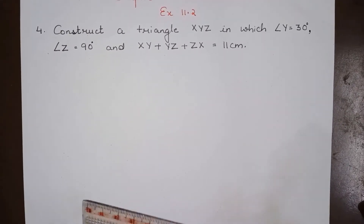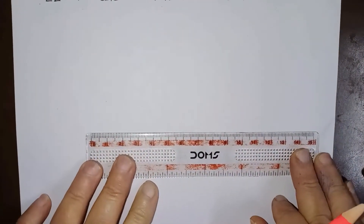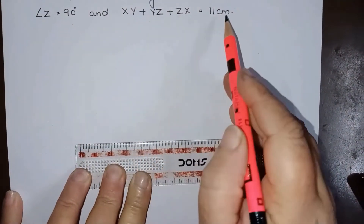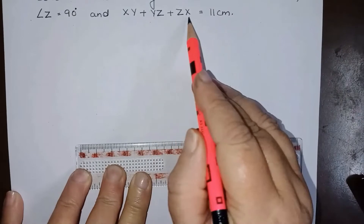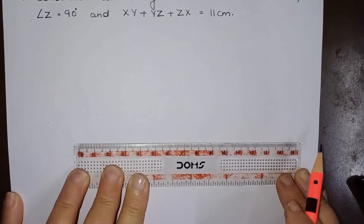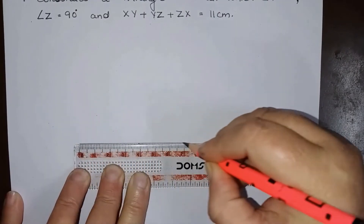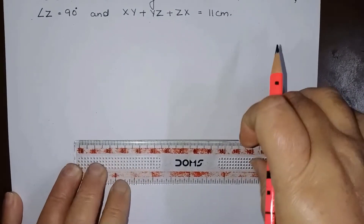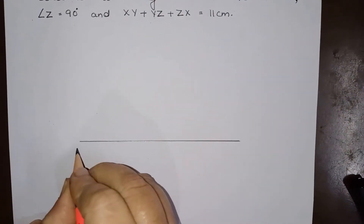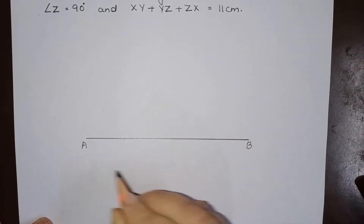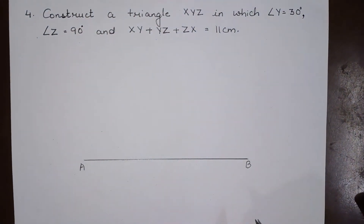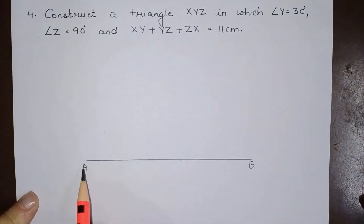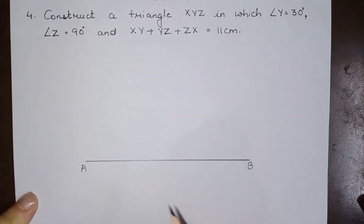So what you have to do here: first of all, draw a line segment of the given length. Given length means the perimeter is given to be 11 cm. Perimeter means sum of all the sides. So first of all we will draw a line segment of length 11 cm and name it AB. This name should be other than the representations already given — we have to construct triangle XYZ, so we name this line AB, which is 11 cm.